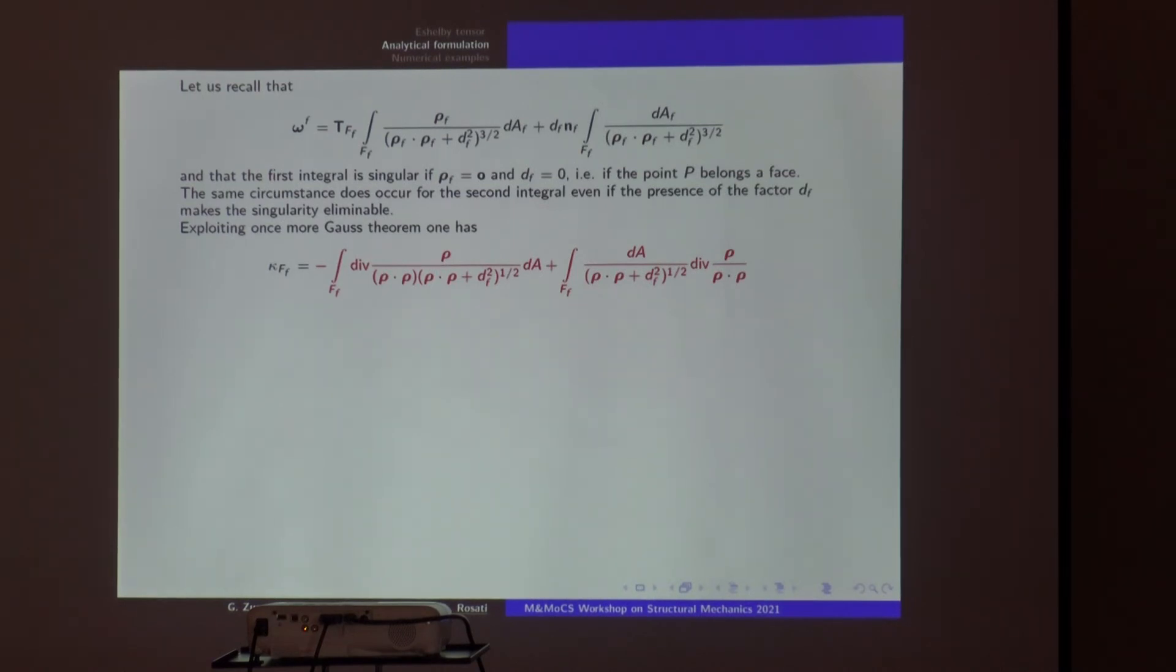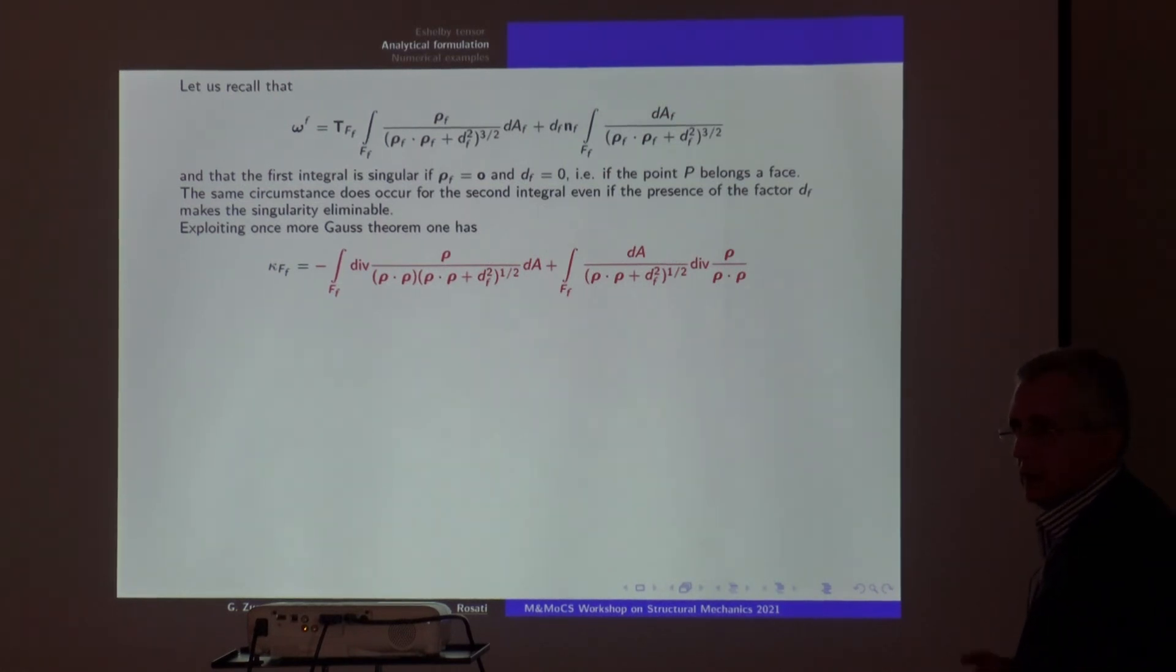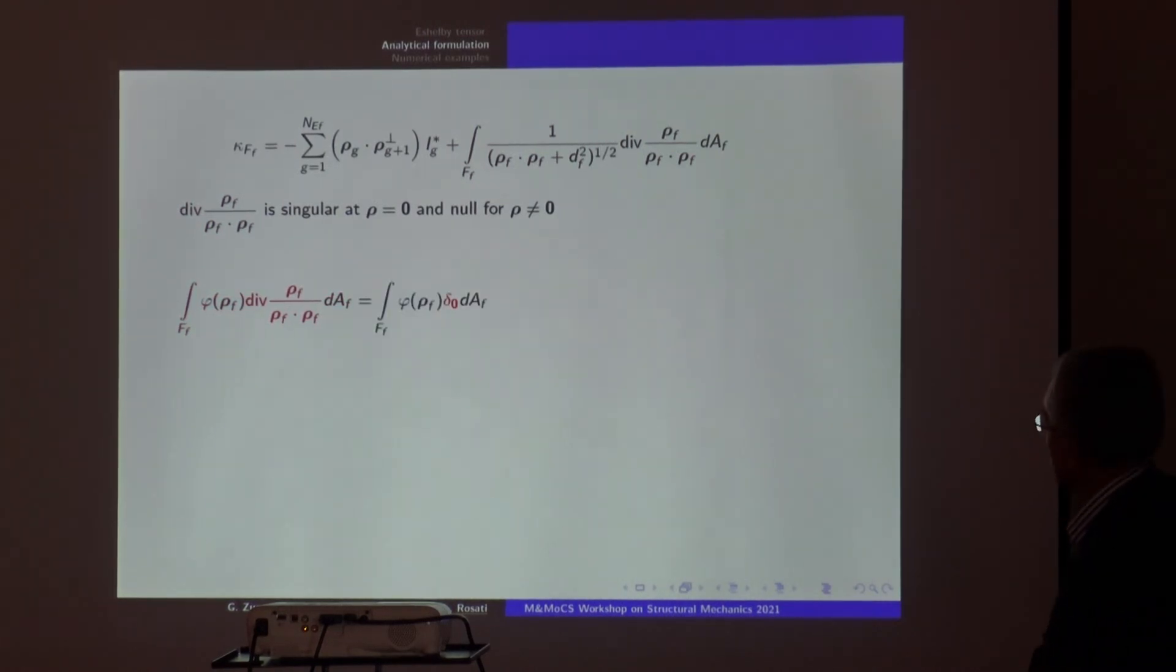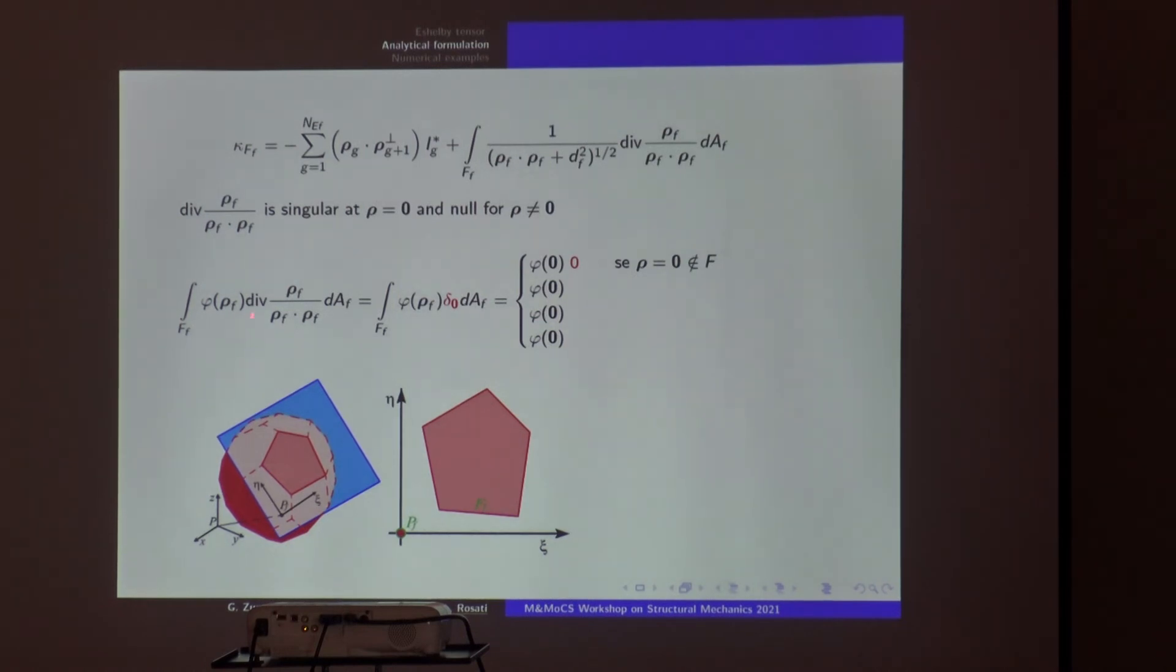The main problem is this: when you apply the Gauss theorem, it naturally appears this integral that is a sort of Dirac delta. Applied to the integral, it means if the rho vector, if the point of integration, is inside your domain, this integral is zero. Otherwise, if it is on the boundary, you have to evaluate an additional term that is exactly similar to the one that appears in the boundary element method. This is the definition.